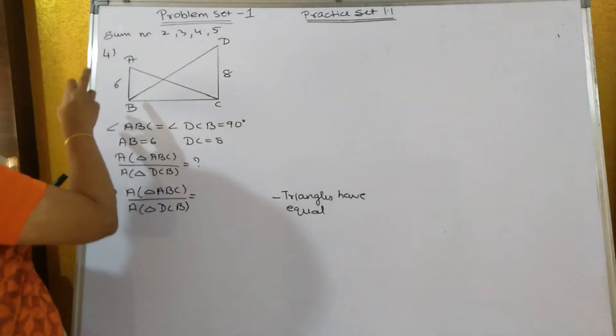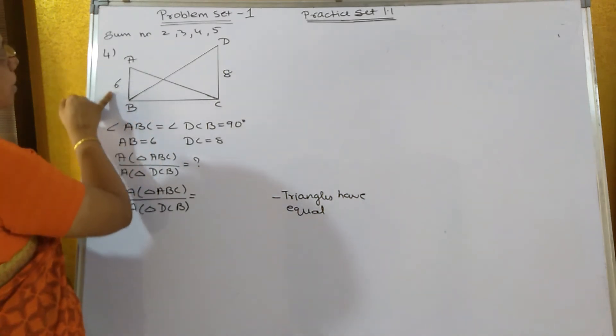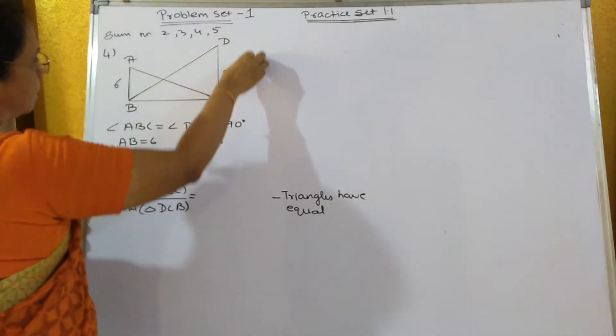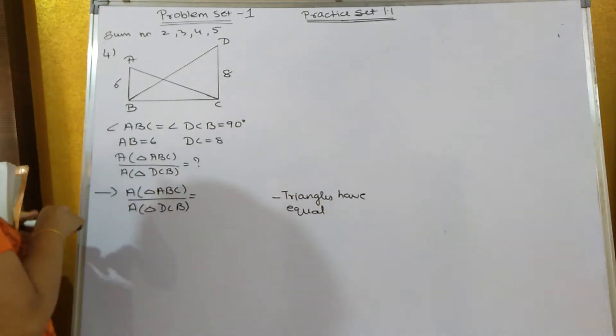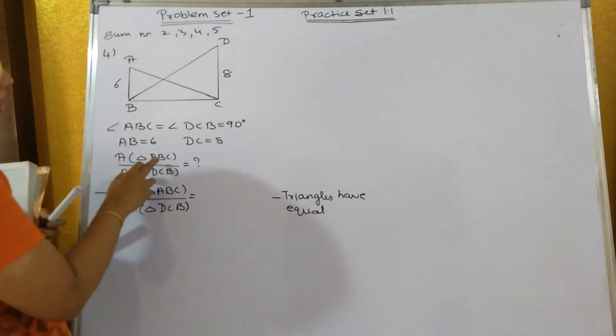Sum number 4: the heights are already given. AB is equal to 6 and DC is equal to 8. You have to find out the area of triangle ABC.